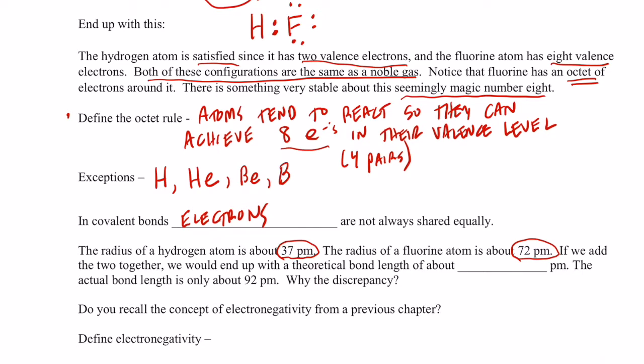Now, if we add these two together, we end up with a theoretical bond length of about 37 picometers plus 72 picometers. We end up with a theoretical bond length of about 109 picometers. Now, actual experimental evidence shows that that bond length is only 92 picometers. It's considerably shorter than what we expect it to be.